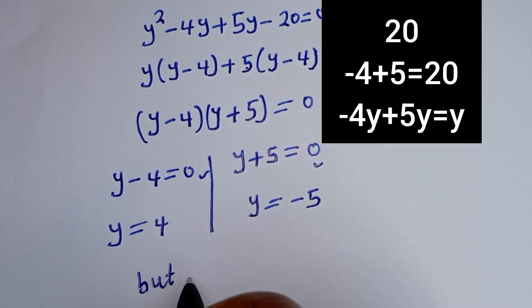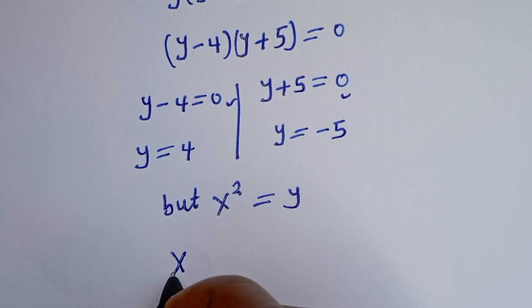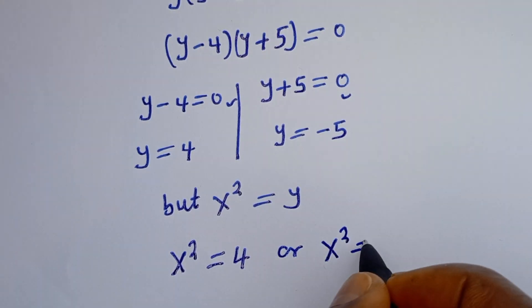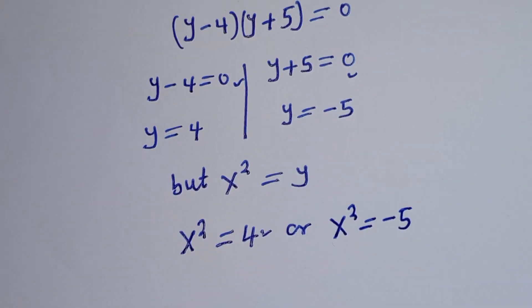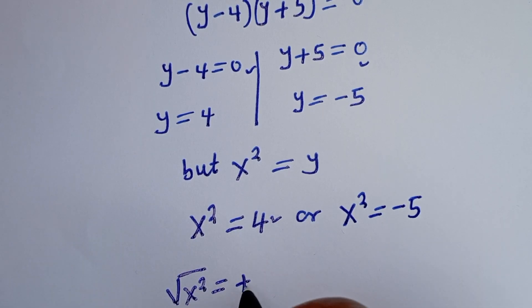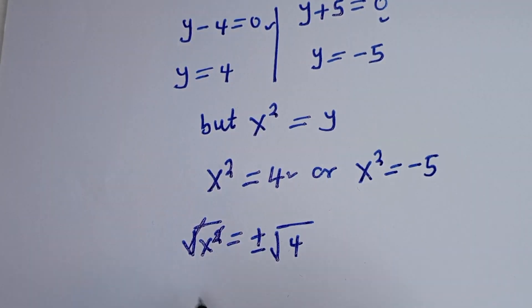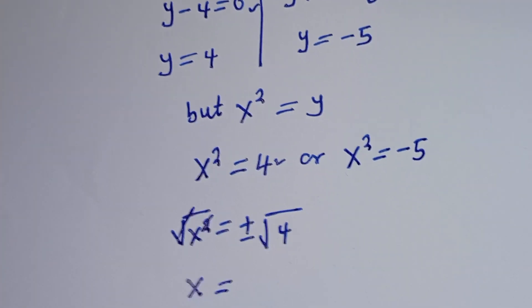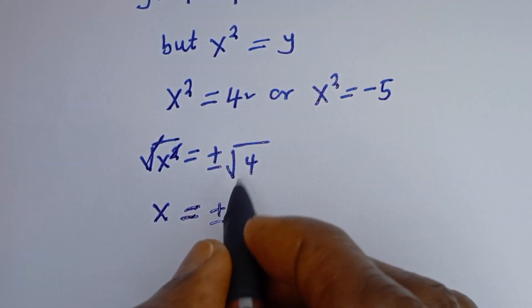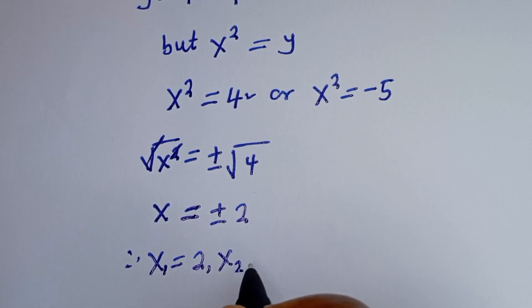But s squared is equal to y. So s squared is equal to 4, or s squared is equal to minus 5. For the first case, taking the square root of both sides, s is equal to plus or minus the square root of 4, which is plus or minus 2. Therefore, S1 is equal to 2 and S2 is equal to minus 2.